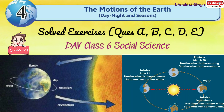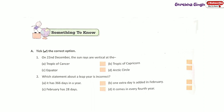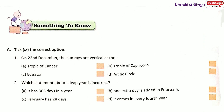Chapter 4: The Motions of the Earth. Classic Social Science. Question A: Take the correct option. Question 1: On 22nd December, the sun rays are vertical at the Tropic of Capricorn.